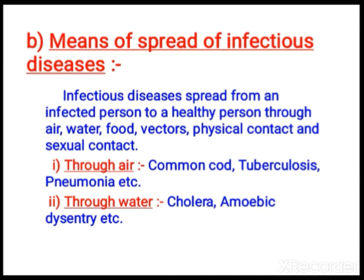First, let us see the means of spread. The spread of diseases can be through air, water, food, vectors, physical contact, sexual contact, etc. Airborne diseases include common cold — you can add COVID also — tuberculosis, and pneumonia, all coming under this category.